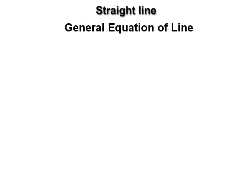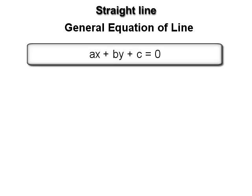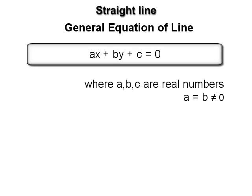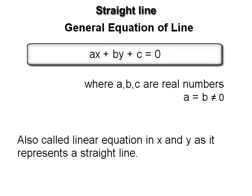General equation of a line: from the different forms of the equation of a line, we observe that an equation of a line is of the form ax + by + c = 0, where a, b, c are real numbers and a and b are not both zero. This is the general equation of a line, also called a linear equation in x and y, as it represents a straight line.